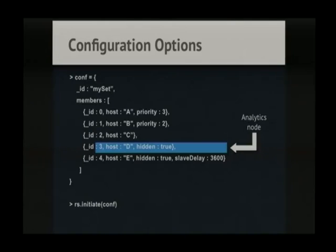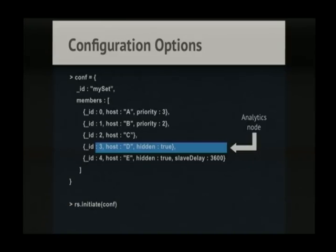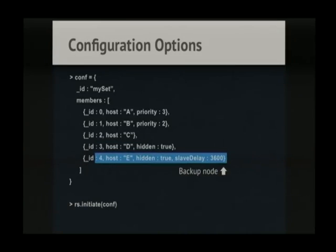Host D is a hidden node. A hidden node can only be read from if you connect to it directly — not through the normal replica set read pool. This is useful for running analytics such as map-reduce queries against that hidden node without it being in the regular pool. The last node is a backup node with a delay of 3,600 seconds — essentially an hour delay — so if you accidentally delete something on the primary, you have an hour's window to recover data from the backup node.